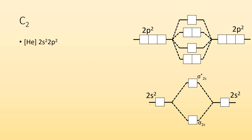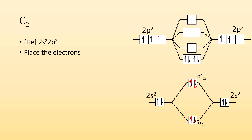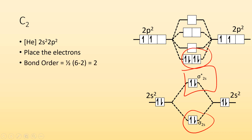C2, same process. Carbon is 2s2, 2p2. Place all the electrons into the molecular orbitals — two, four in the sigma levels, then four more across the degenerate pi levels. That gives 6 bonding electrons and 2 anti-bonding electrons, giving a bond order of 2.